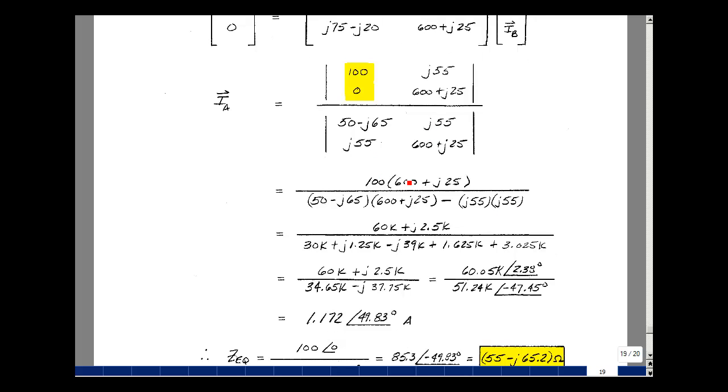So this times this is 60,000, and then this times this is J 2,500, and multiply this times this, which is 30,000, and multiply this times this, which is a plus J 1,250, and then this times this is a minus J 39,000, and then this times this is going to give me a J squared, and then I've got another minus sign here, so a plus sign, and that turns out to be 1,625, and then the product of these two is 3,025, then they have a minus sign and a J squared, so I get a plus sign.